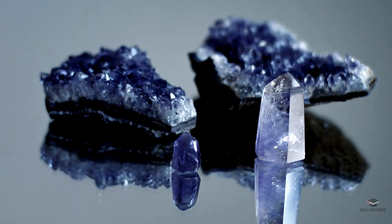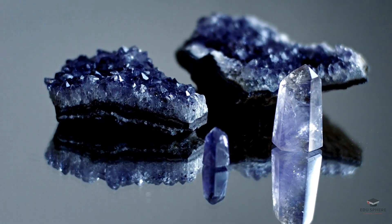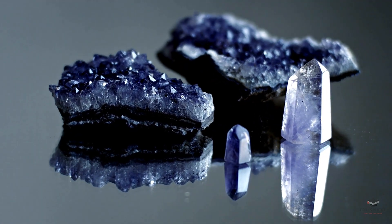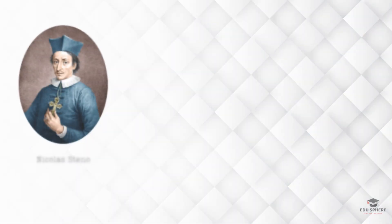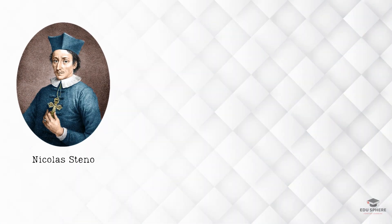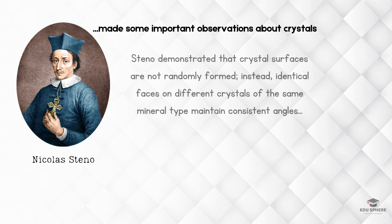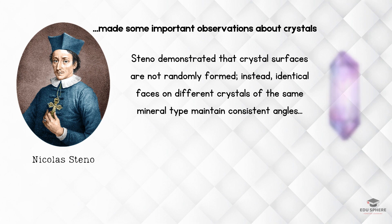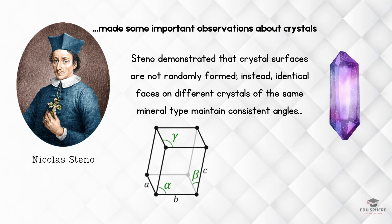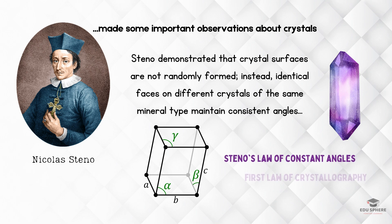Crystals in nature rarely look exactly alike in terms of their size and shape. But in 1669, Danish scientist Nicholas Steno made some important observations about crystals. Steno showed that the bounding surfaces of crystals are not by chance. Rather, similar faces on different crystals of the same mineral species have constant angles. His work led to Steno's law of constant angles, also known as the first law of crystallography.